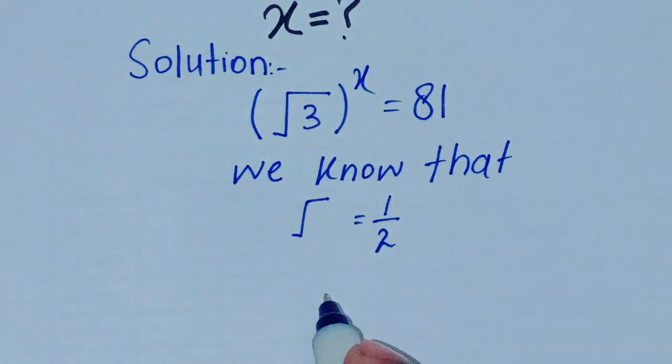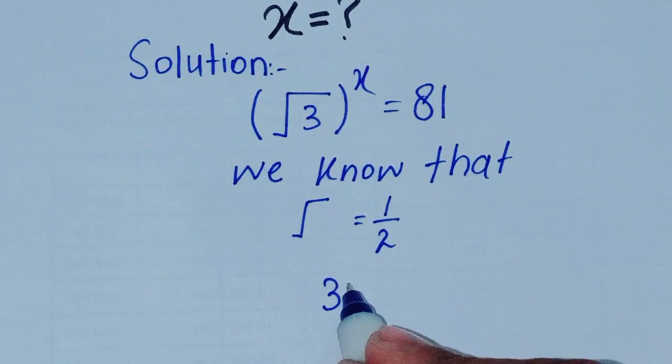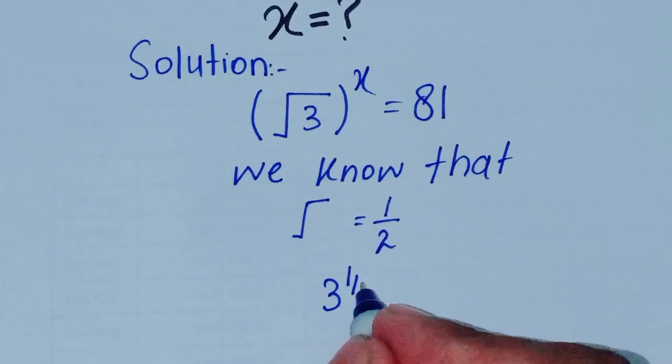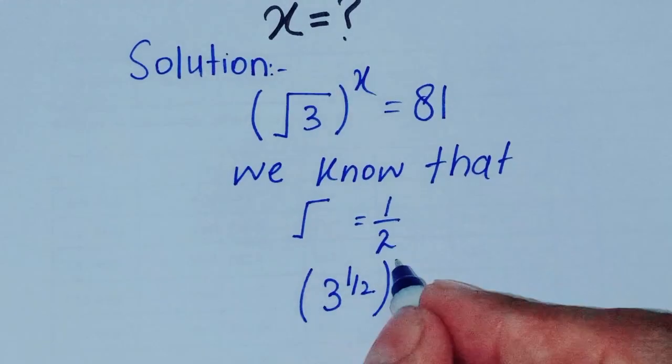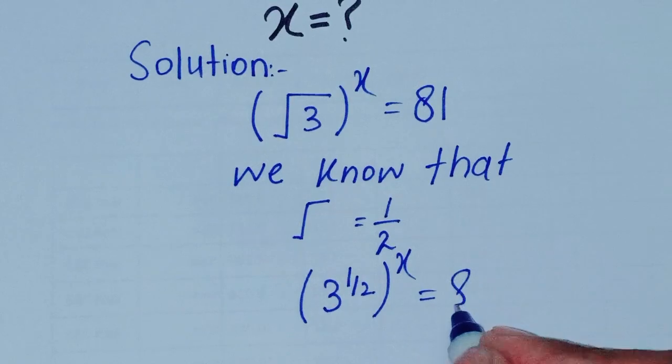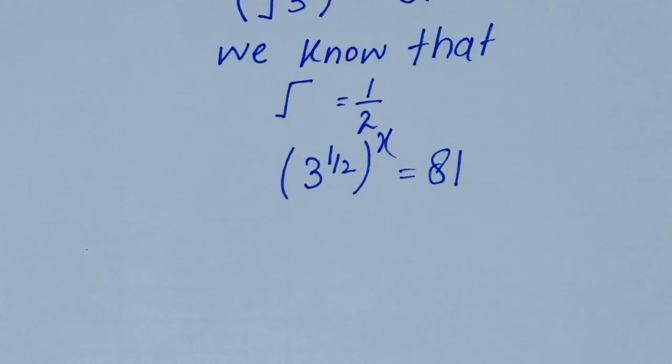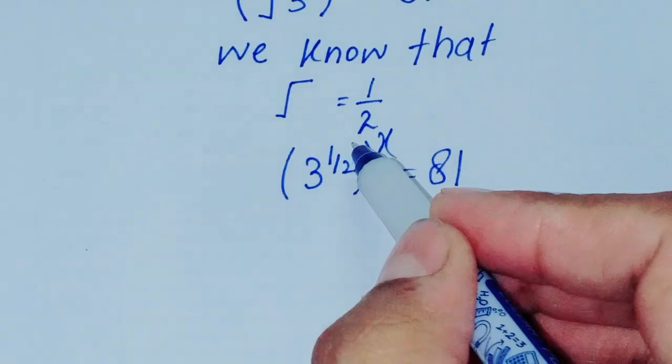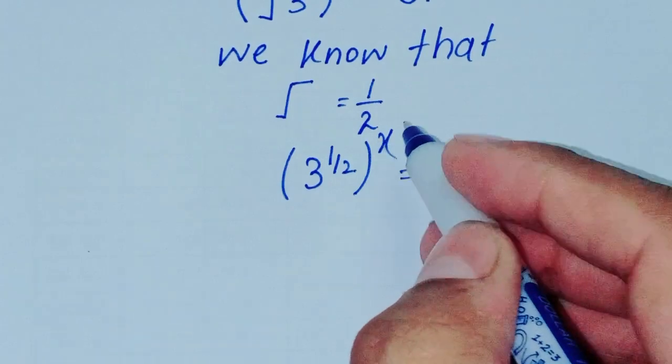So we can write it as 3^(1/2) whole power x equals 81. Both powers are multiplying.